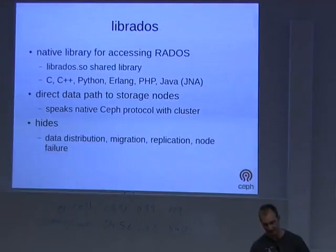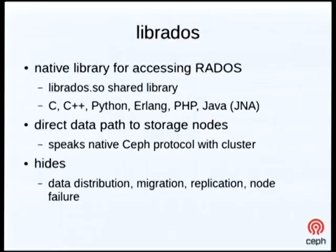So what is librados? Librados is a native library for accessing this distributed object store, RADOS. It's a shared library with bindings in all these different languages. It gives you a direct data path to all the storage nodes — it speaks the native Ceph protocol on the back end, and the client node talks directly to the storage server that has the data it needs. It hides all the details of data distribution, migration, replication, and node failure. Your application doesn't have to worry about any of that.